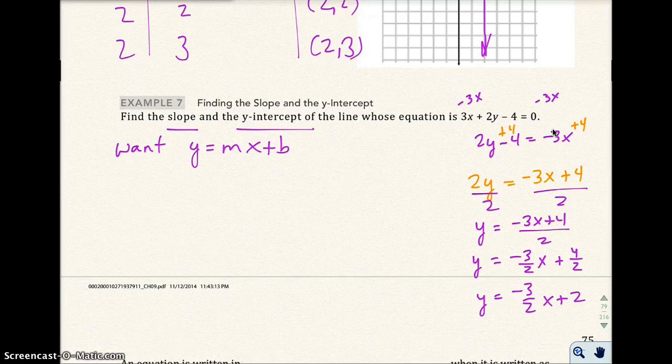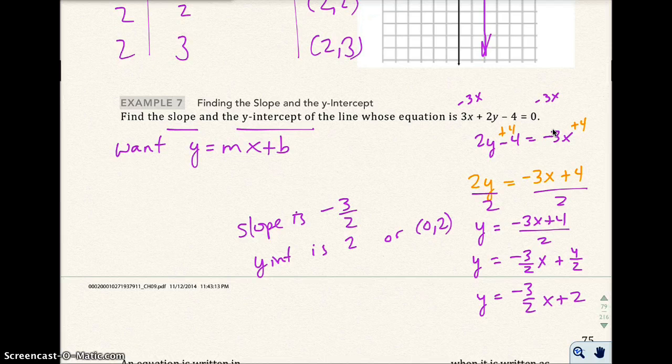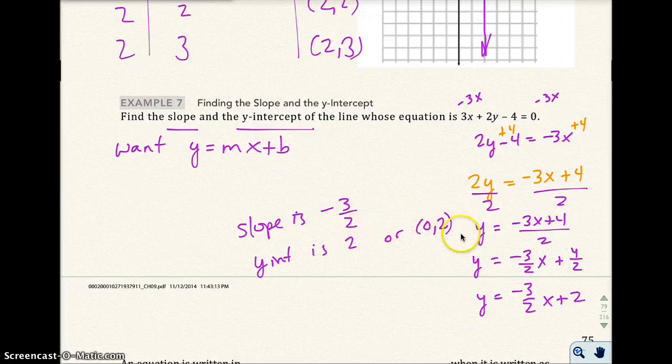And then divide both sides by 2. I get y equals -3x plus 4 over 2. Then I separate them. I get y equals -3/2 x plus 2. Okay. So the slope is -3 over 2. And the y-intercept is 2 or (0, 2). In my math lab work, they might just ask for the 2. But on the exam, I'm going to want the (0, 2) also. Okay.